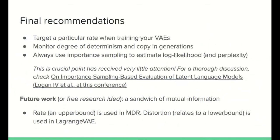Here's a future research idea: rate is an upper bound to mutual information and it's part of MDR; distortion relates to a lower bound and it's part of the Lagrange VAE. Perhaps there is something to exploiting both simultaneously that can give us more control over collapse. Check our paper, check our code, and please join us for the Q&A. Thanks for watching.